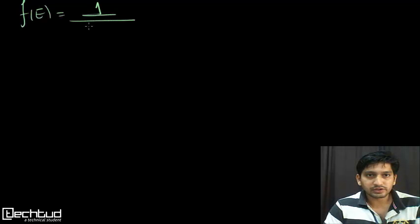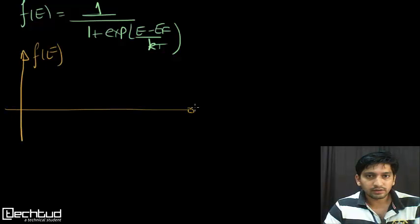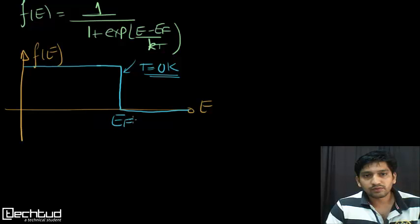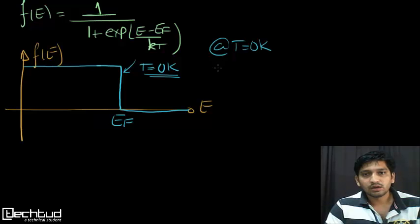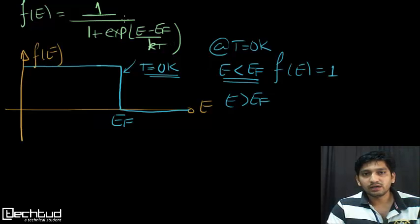Let us see in detail how the plot of F(E), that is 1 divided by (1 plus exponential of (E minus EF) divided by kT), looks. When we plot F(E) versus energy E at T equal to 0 Kelvin, when E is less than EF the exponent goes to minus infinity, so F(E) equals 1. When E is greater than EF the exponent goes to plus infinity, so F(E) equals 0.